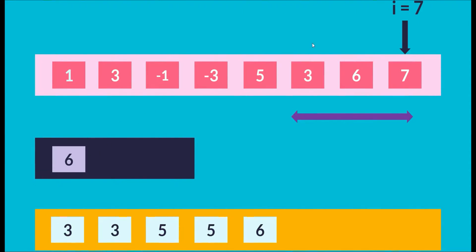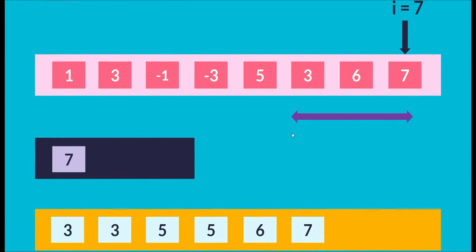i is incremented to index 7, element 7. The element at the back of the DQ is 6, which is smaller than 7, so we pop 6. The DQ is empty, so we push index 7. The maximum at the front is index 7, element 7, so we push 7 onto the output. There are no more sliding windows to process, so we stop the for loop and return the final output array. We use a DQ, push elements at the back, and the maximum is always maintained at the front.